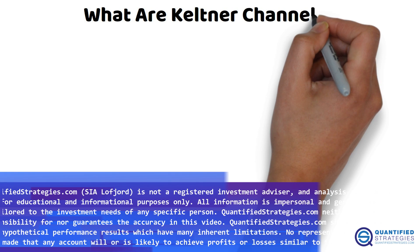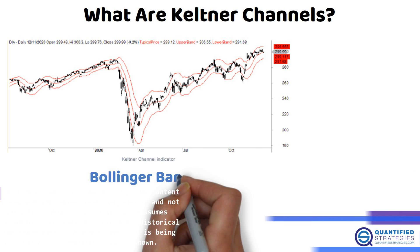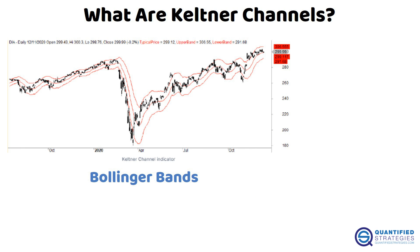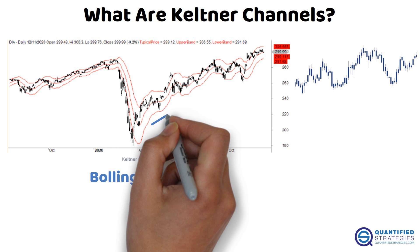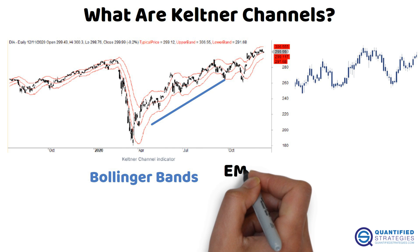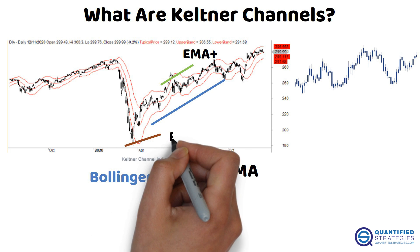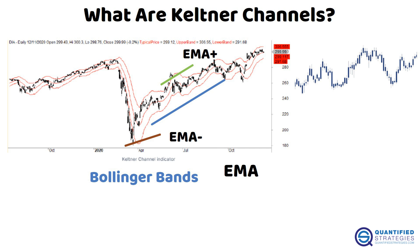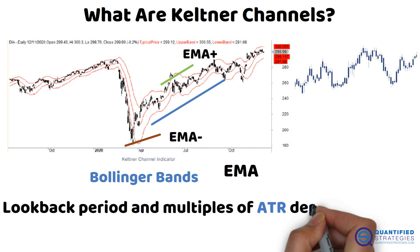What are Keltner channels? Keltner channels are a type of trading band, similar to Bollinger bands, but with one key difference: they use the average true range instead of standard deviation. A Keltner channel is built around an exponential moving average, abbreviated EMA. The upper band is the EMA plus a multiple of the average true range indicator, and the lower band is the EMA minus the same multiple of the ATR. However, the optimal look-back period and multiples of ATR depend on the asset traded.